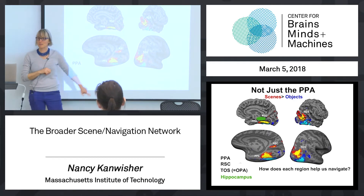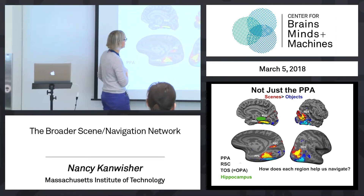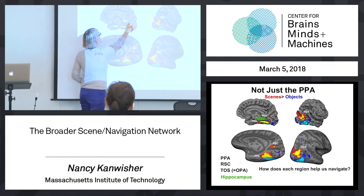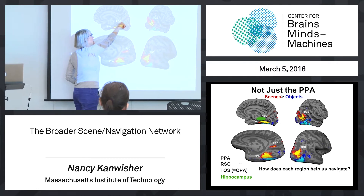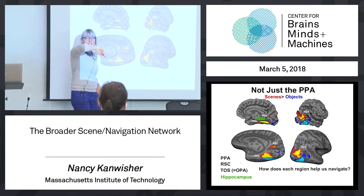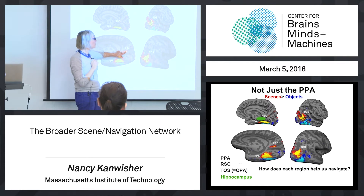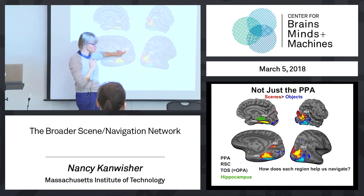So that's the region we've been talking about so far. But there are two other regions here. There's this little guy hiding in the sulcus up here called RSC for retrosplenial cortex. And here it is unfolded, where you can see more of it — it also responds more to scenes than objects.